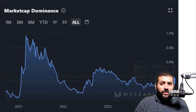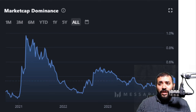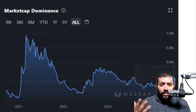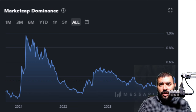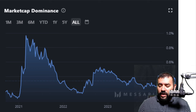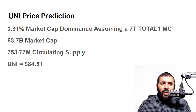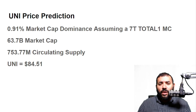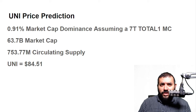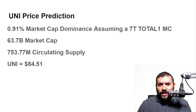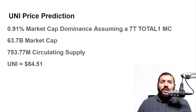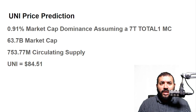Instead of predicting this to go to 0.4% or 0.5% market cap dominance, I do think it's going to go back to its previous all-time high. Whenever euphoria returns — whenever your grandma, your Uber driver, your barber are talking about crypto — I think Uniswap is going to pump like crazy. At 0.91% market cap dominance, assuming a $7 trillion total crypto market cap, that gives us a $63.7 billion market cap. Dividing that by 753.77 million in circulating supply gives us a Uniswap price of $84.51.